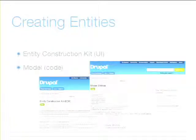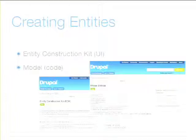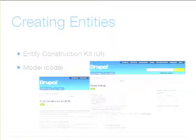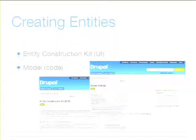So all this entity stuff looks exciting — maybe you want to create some entities. There are a couple of ways. There is an Entity Construction Kit — sounds a bit like Content Construction Kit — that lets you use the UI to create custom entities. If you're a developer who'd rather do it in code, there's a module called Model. Think back to the story module and page module — it's the same idea: example code that you copy, rename everything, and you've got all you need to build a new entity without figuring it all out yourself.